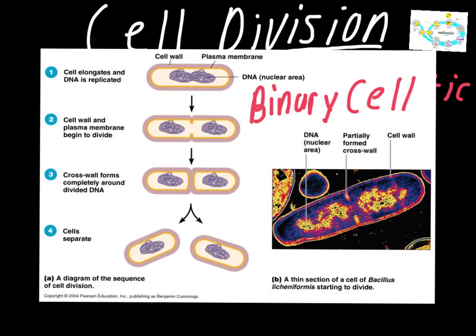In step three, the cell wall begins to form and it completely closes around that section of DNA, so it's now stuck in one half of the cell. And in the last step, these two sections pinch off, the cells separate, and now at the end we have two new cells with the exact same DNA in each one.